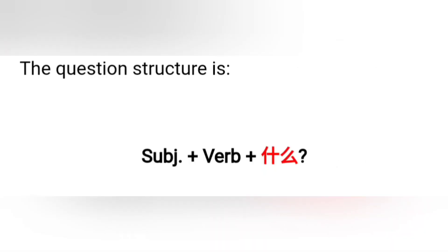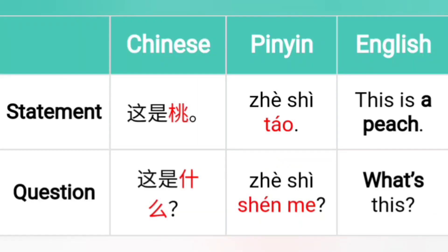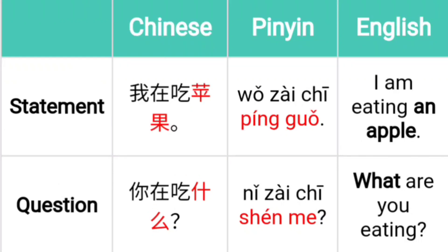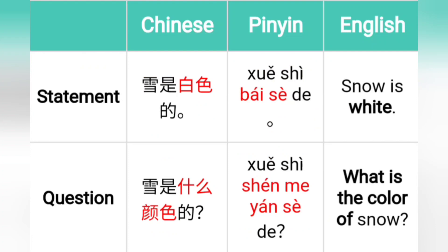The question structure is subject, verb, and then 'shuma.' For example, the statement 'this is a pen' is 'Zhè shì.' Now if you ask it in question form, it will be 'Zhè shì shénme?' — that means 'what is this?' Another example: 'I am eating an apple' — 'Wǒ zài chī píngguǒ.' In the question form, 'what are you eating?' is 'Nǐ chī shénme?'